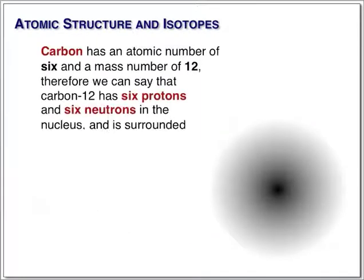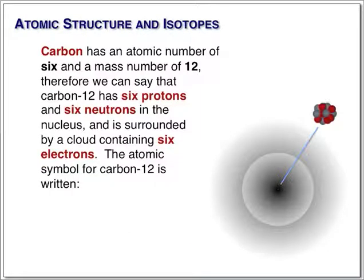Let's look at carbon a little more closely. This is carbon-12. It has a nucleus containing six protons and six neutrons. We could write the atomic symbol like this.